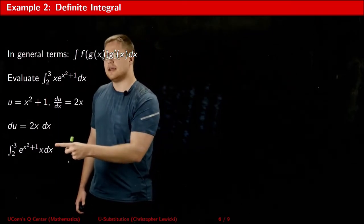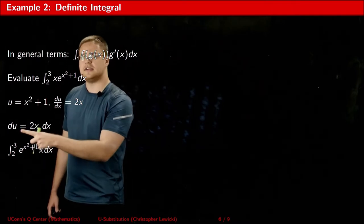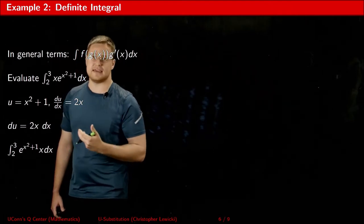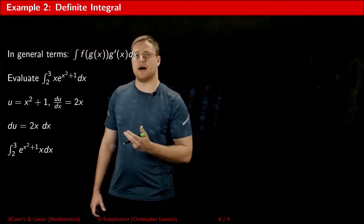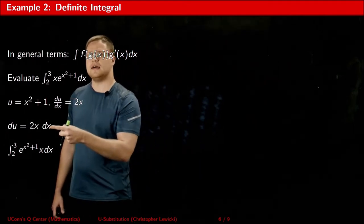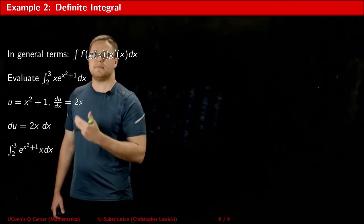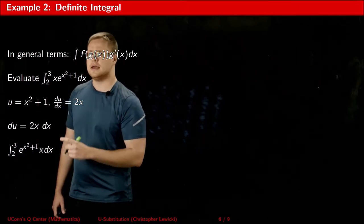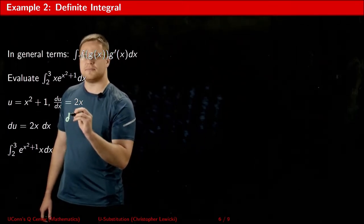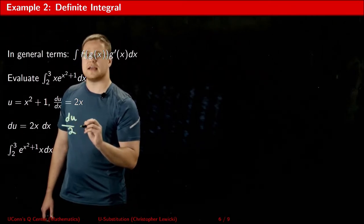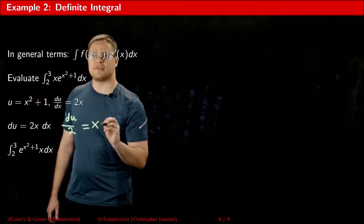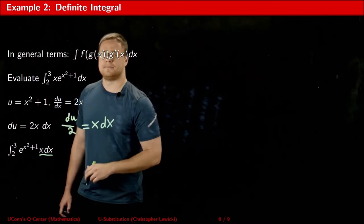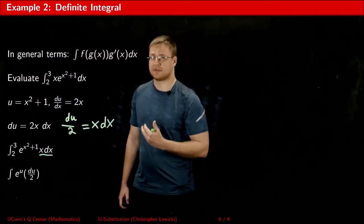Before doing the substitutions, we have a bit of a problem. Our du equals 2x dx, but we don't have 2x dx here — we just have x dx. If you ever run into this problem where you're off by a constant, simply multiply or divide both sides of the du equation by whichever constant is needed to get it to match up. In this case, I'm going to divide both sides by 2, so I get du divided by 2 equals x dx, which matches what we have in our expression.